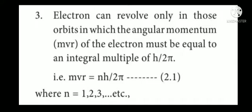Third postulate: an electron can revolve only in those orbits in which the angular momentum mvr of the electron is equal to an integral multiple of h/2π. Mathematically expressed as mvr = nh/2π (equation 2.1), where n = 1, 2, 3, etc. Only electrons whose angular momentum satisfies mvr = nh/2π can revolve in these orbits.